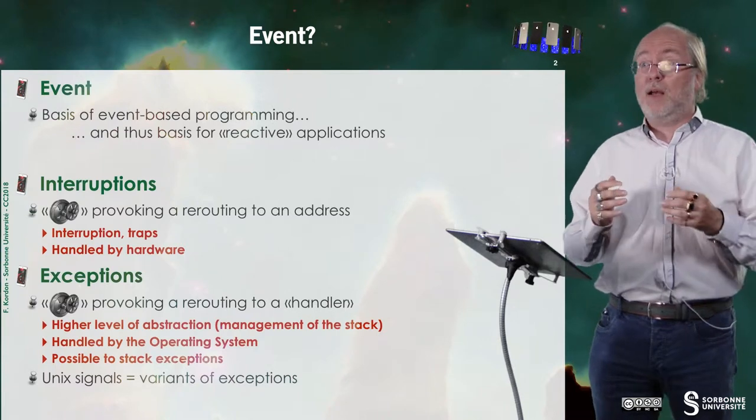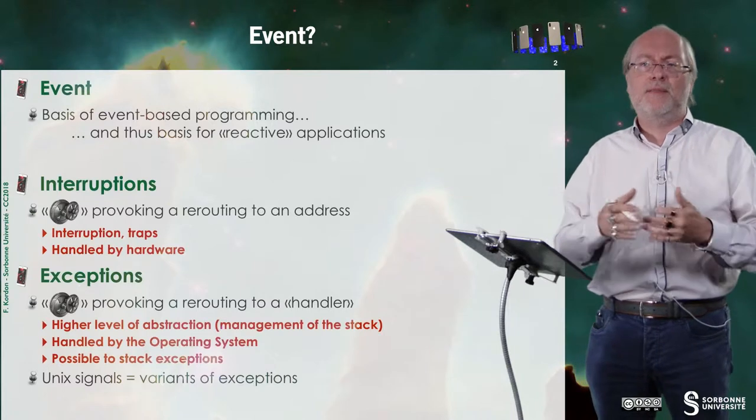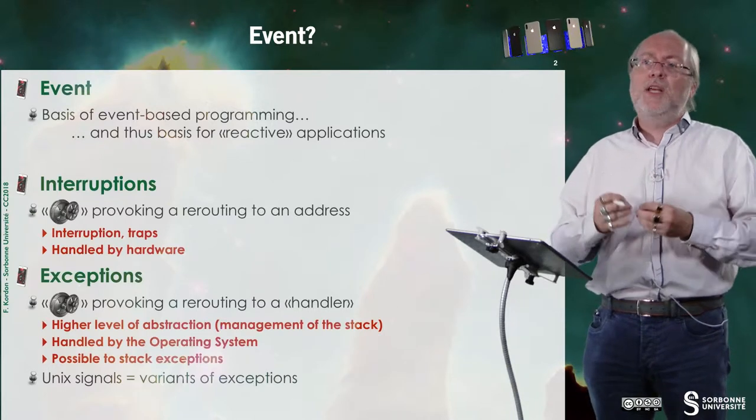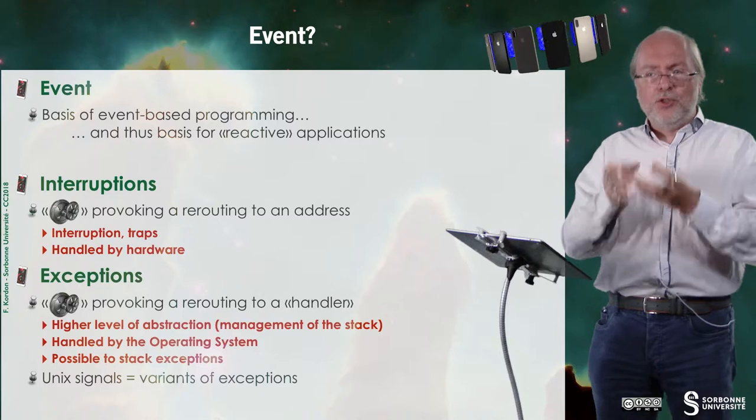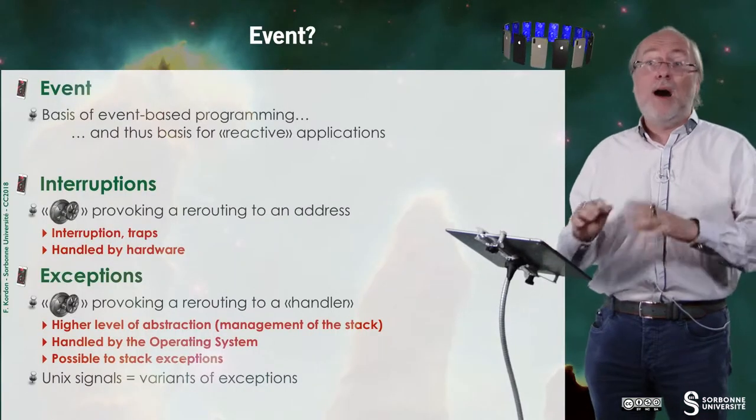You may know interruptions. An interruption is a mechanism that provokes the rerouting of your program to an address. Basically you have interruptions that are the result of external hardware mechanisms, and you also have traps that are related to the execution of the current application. For example, when you try to divide something by zero, the division instruction generates what we call a trap. So there is a subtle difference between the two, and everything is handled by hardware.